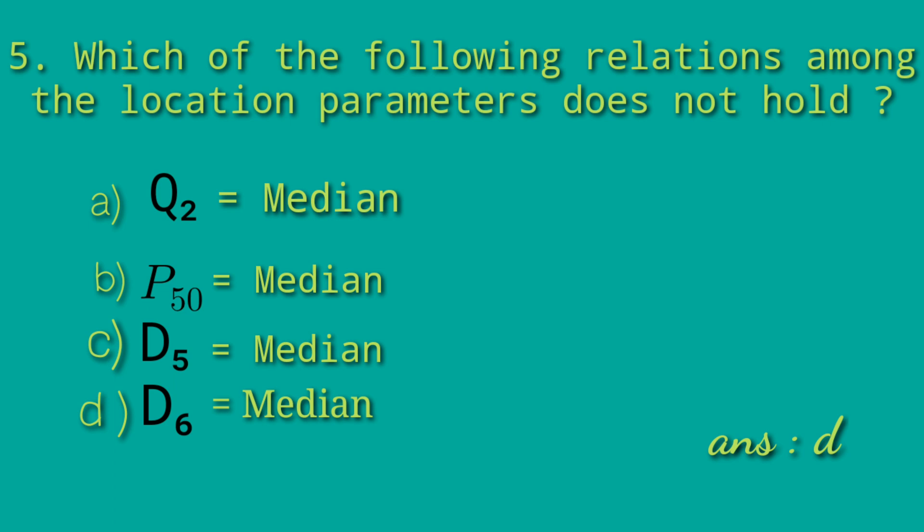Deciles are 9: D1, D2, up to D9. The middle value is D5, which is the median. But D6 is not the median. So the wrong answer that does not hold is Option D: D6 equals median.